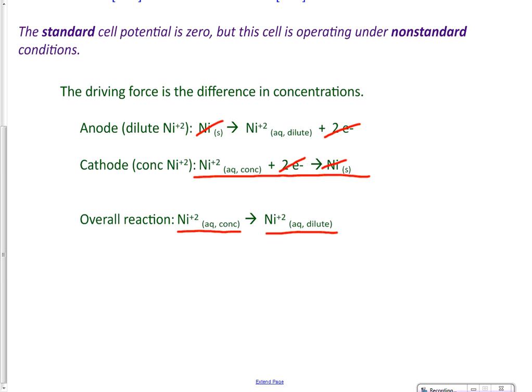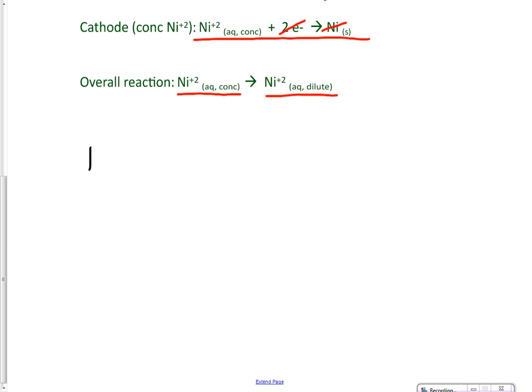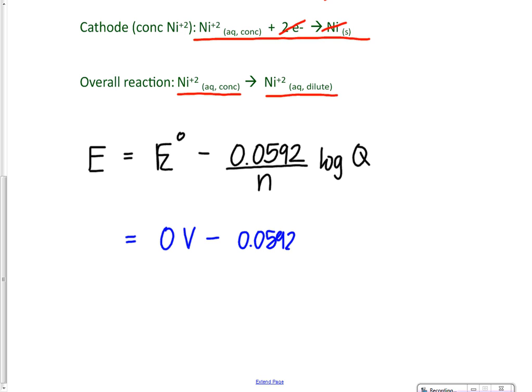So if we want to do the math of this, what we would do is we would use the Nernst equation, because that's what will work for non-standard conditions. We're going to find what this would be. So again, using the formula E standard minus 0.0592 divided by N and then times the log of Q. But this time to find the cell potential, we're going to use the concentration. So we could look up the standard cell potential, but we don't need to because when you have the same cathode and same anode, under standard conditions, it would operate under zero volts. Now, if we look at what is our N value supposed to be? See if you can figure out what N should be. But you can see from what I've crossed out that we've crossed out two electrons, so it should be a two.